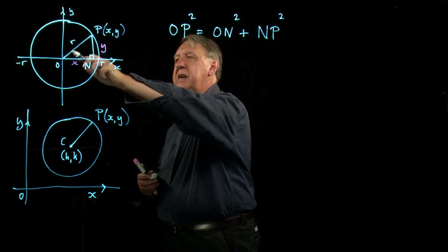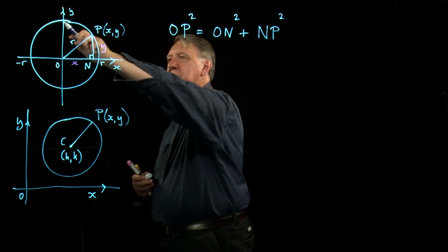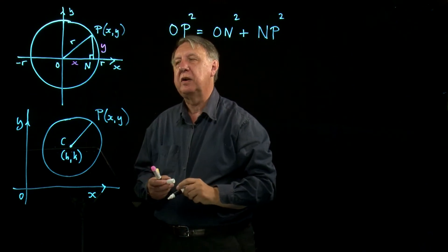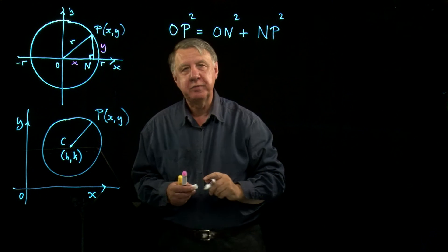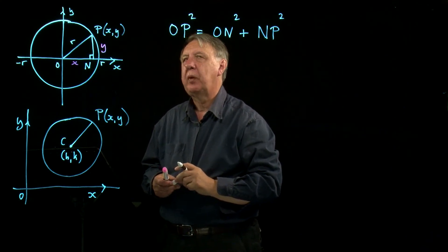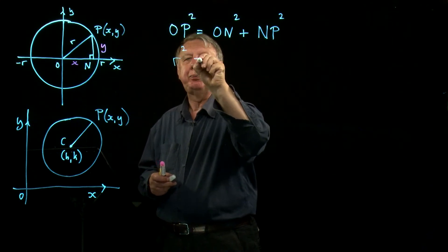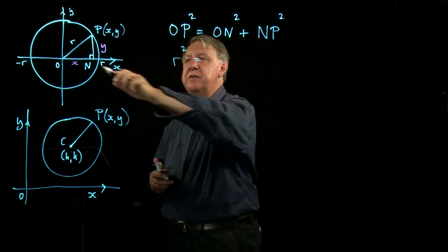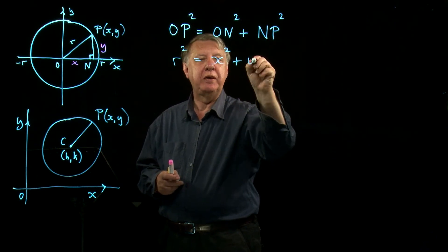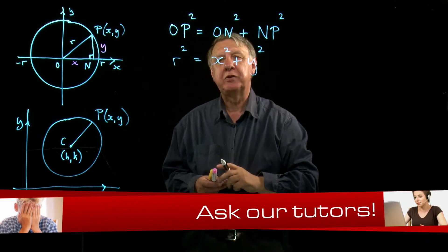In this case, OP squared, OP is the radius of the circle. And you'll notice that as the circle goes round, the X coordinate here must be plus R because the radius is R. And across the other side, the X coordinate must be minus R at that point. So OP then is R. So R squared equals ON is now X, so that's X squared. And NP is Y, so we end up with R squared equals X squared plus Y squared.